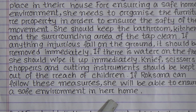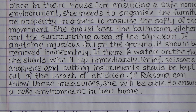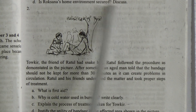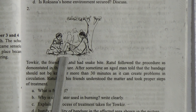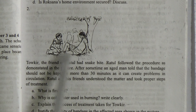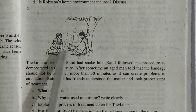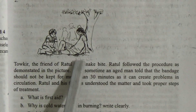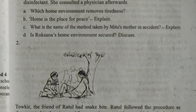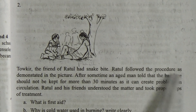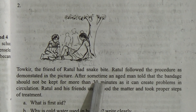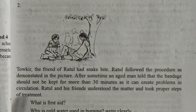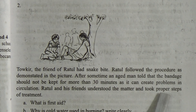Now for creative question answer two, a picture is given. We can see a person who is injured and sitting under a tree, and another person helping the injured person to recover. The symbol shown is that of a snake bite — the person has been bitten by a snake. The scenario: Toki, the friend of Ratul, had a snake bite. Ratul followed the procedure as demonstrated in the picture. An elderly man advised that the bandage should not be kept for more than 30 minutes as it can create problems in circulation.